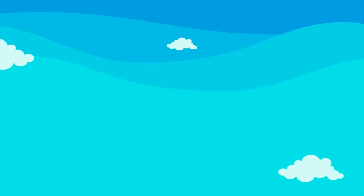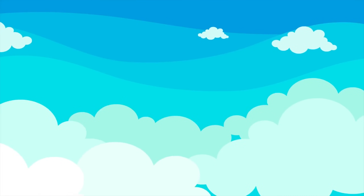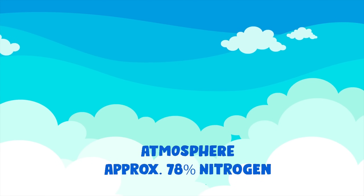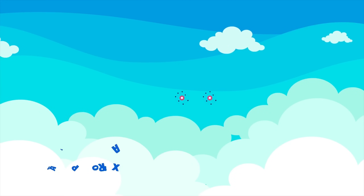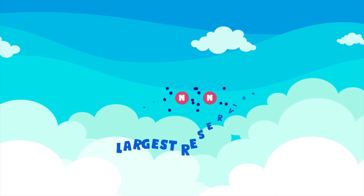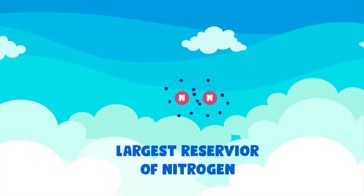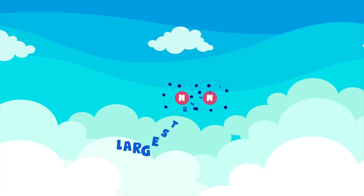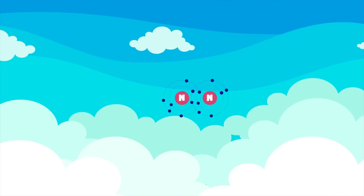Even though our atmosphere consists of several gases, the main constituent is nitrogen gas, which contributes around 78% of the atmospheric gases. The atmosphere is the largest reservoir of nitrogen on earth and contains about 10 to the power 15 tons of nitrogen gas.